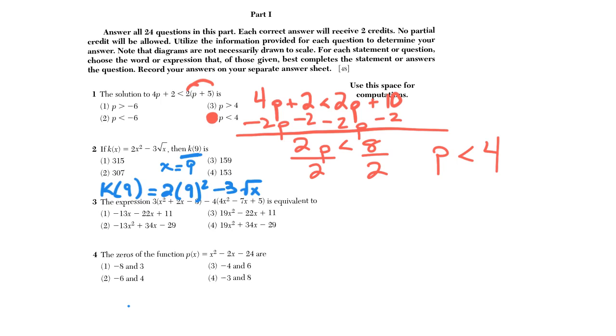9 squared is going to be 81 times 2 is 162. Square root of 9 is obviously just 3, so that's going to be minus 3 times 3 or minus 9. 162 minus 9 is going to give us our final answer, once again choice 4, 153.